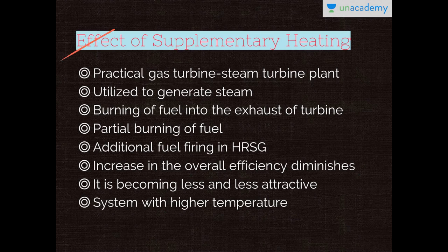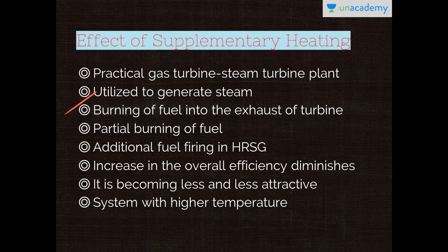Let's move on to the effect of supplementary heating on the overall efficiency of the combined gas turbine or steam turbine power plant. Some thermodynamic concepts of different arrangements of combined cycles have been discussed in the previous lessons. Now, we would consider a practical gas turbine steam turbine power plant where the exhaust from a gas turbine is utilized to generate steam and operate a conventional steam power plant. We will also examine how supplementary heating — that is, the burning of additional fuel into the oxygen-rich exhaust of the gas turbine — affects the overall efficiency of the combined plant.